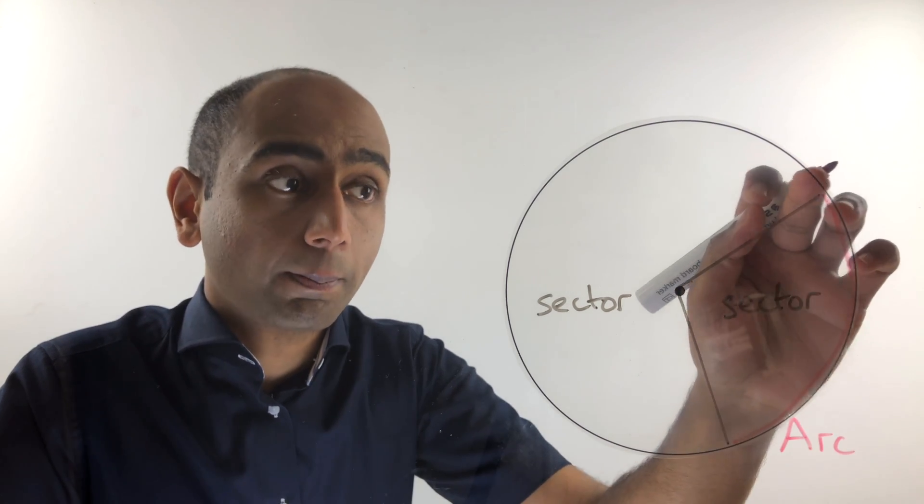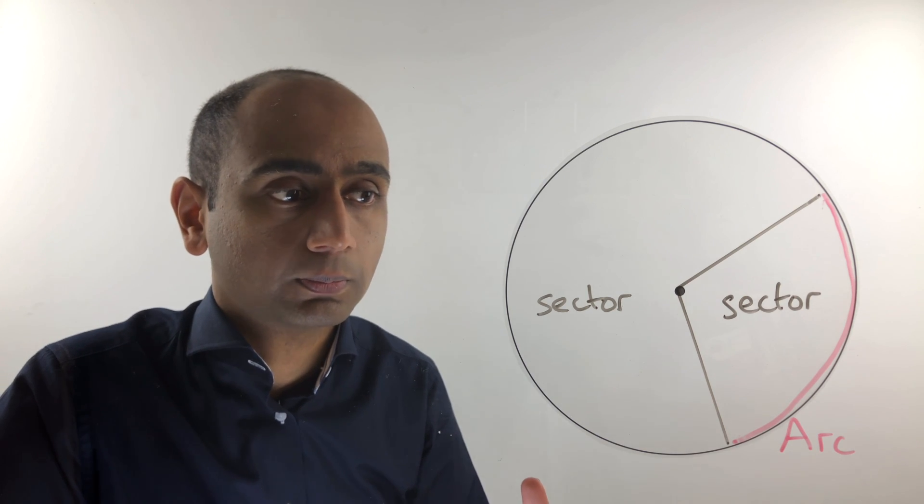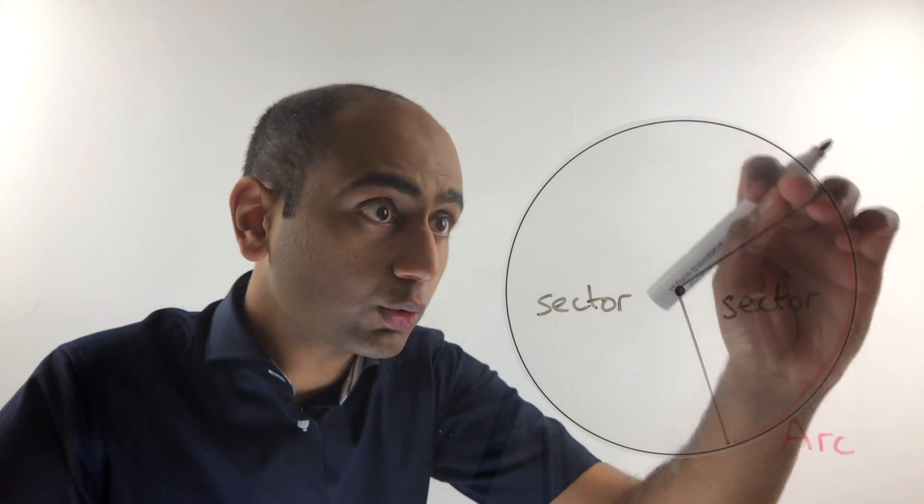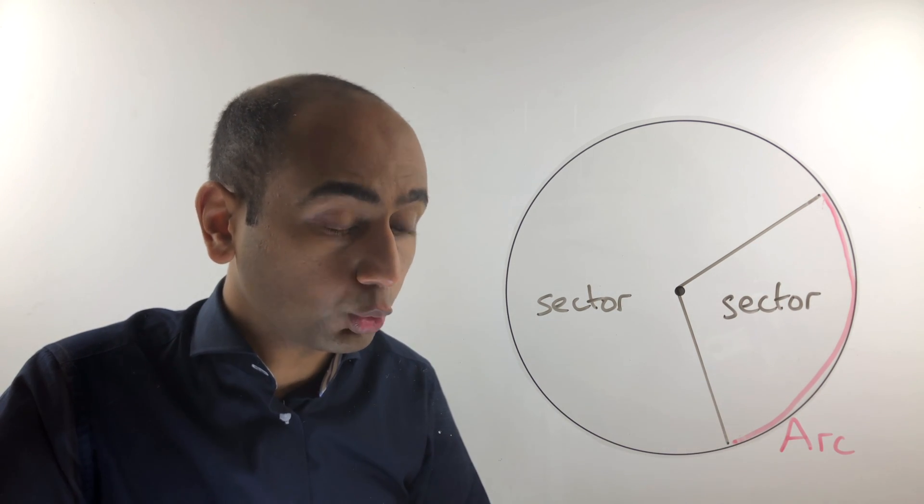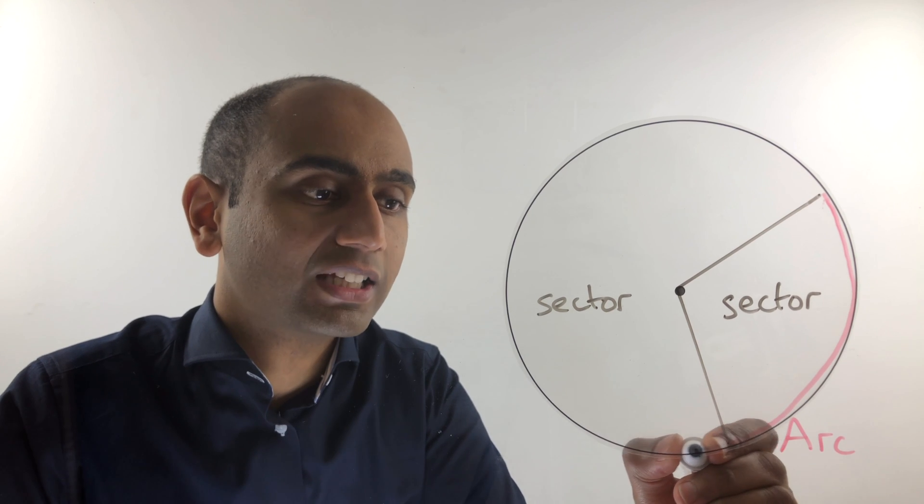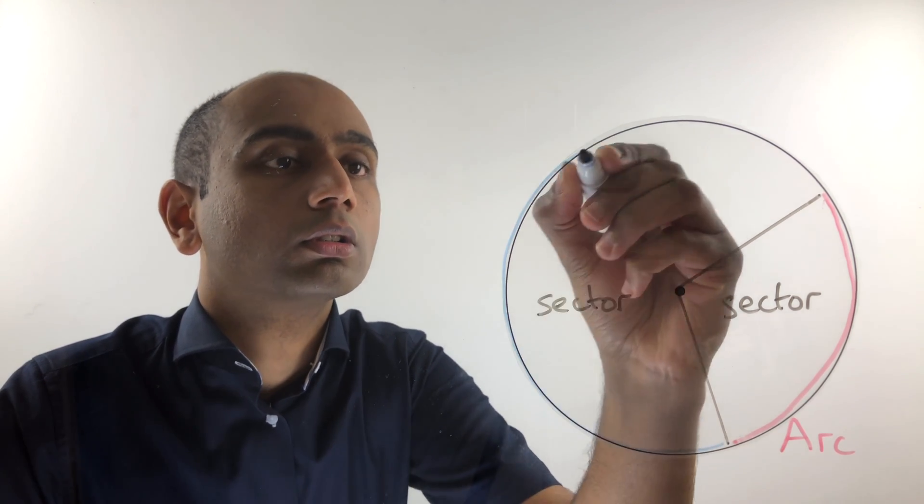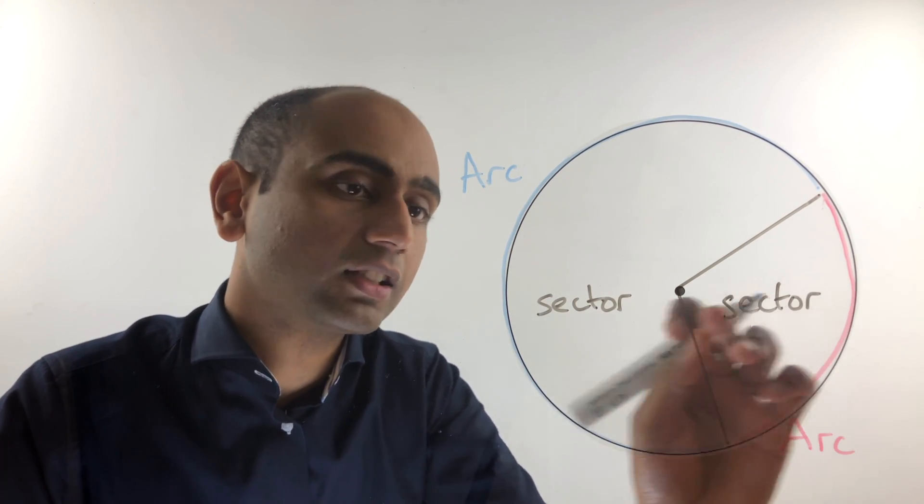It is just part of the circumference of a circle, and we can work out the length of this arc, which we will cover in a later lesson. And we've also got another arc. This part all the way around here is also an arc.